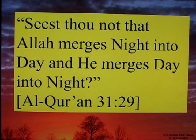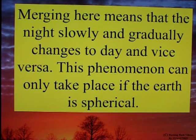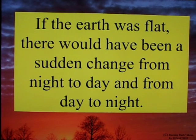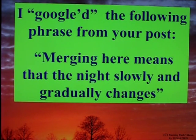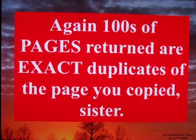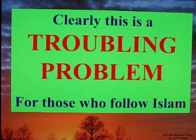'Seest thou not that Allah merges night into day, and he merges day into night? Merging here means that the night gradually and slowly changes to day and vice versa. This phenomenon can only take place if the earth is spherical. If the earth was flat, there would have been a sudden change from night to day and from day to night.' I Googled that phrase from your post. Again, hundreds of pages returned are exact duplicates of the page you copied, sister. Clearly, this is a troubling problem for those who follow Islam.